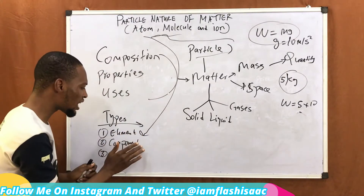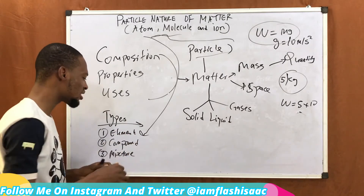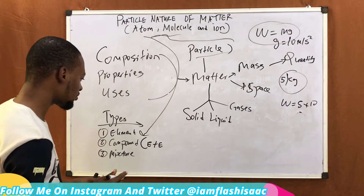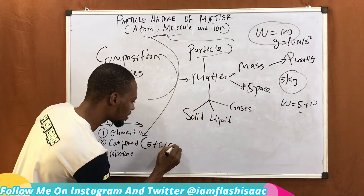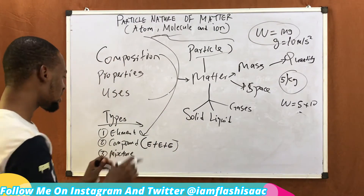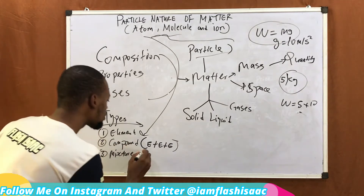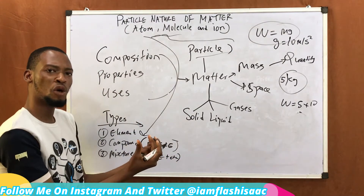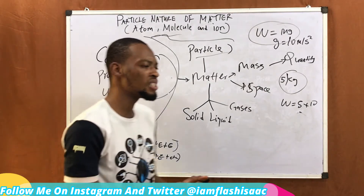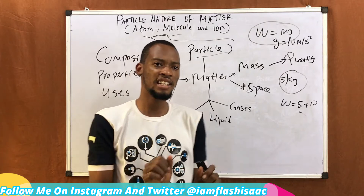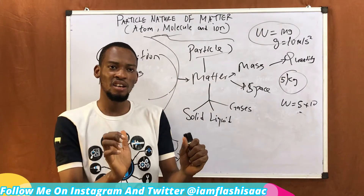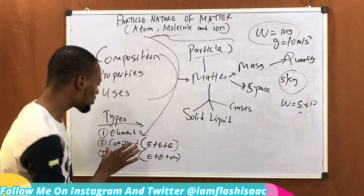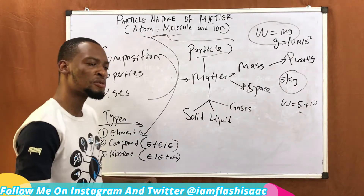Compound contains two or more elements chemically combined. So: element plus element, when combined chemically, forms a compound. A mixture contains two or more elements physically combined. For example, when you pour sand into water, it is mixed but it is physically combined — and you can separate them. However, when you combine elements chemically, you may not be able to separate them, and the product has an entirely different character.